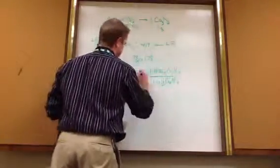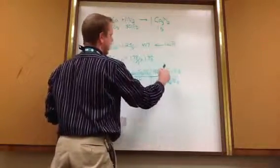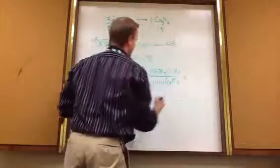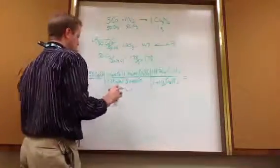Moles cancels moles here, leaving us grams Ca3N2, or calcium nitride. You look up, make sure that's what you wanted to know. Awesome. You do the math. You multiply across the top. You multiply across the bottom. You divide those two numbers.